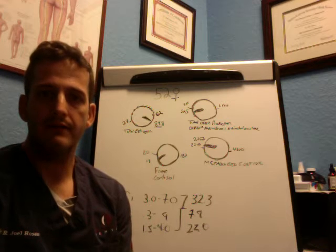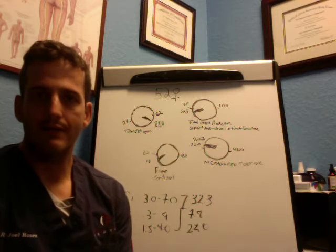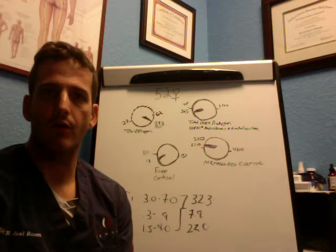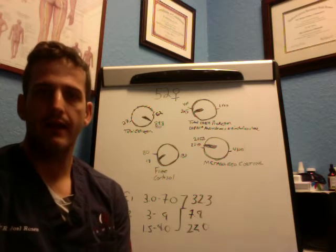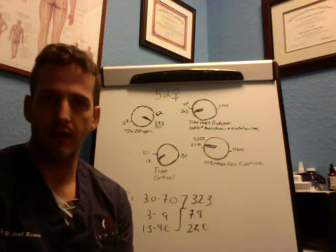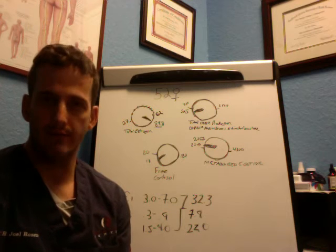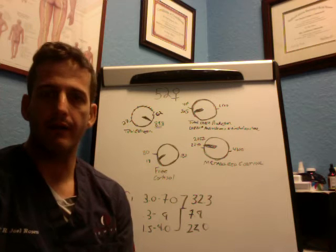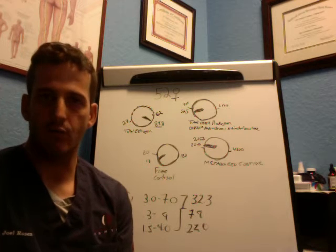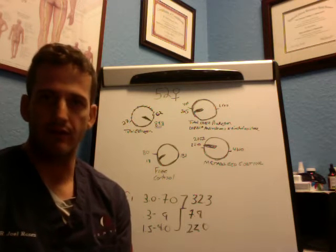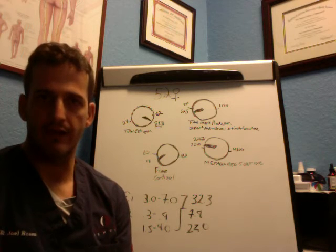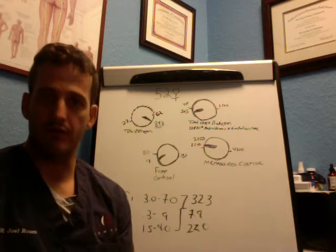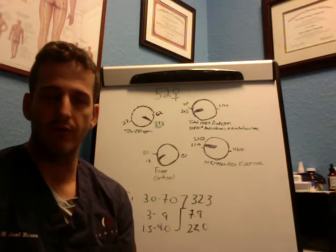However, it does have some weaknesses and the weaknesses are typically it doesn't tell you a lot about the metabolites. When we talk about metabolites, we're talking about how does the hormone break down in its elimination from the body and if it's going towards one direction versus another direction, then that could be more inflammatory, angiogenic or disruptive to your body, continuing your suffering.